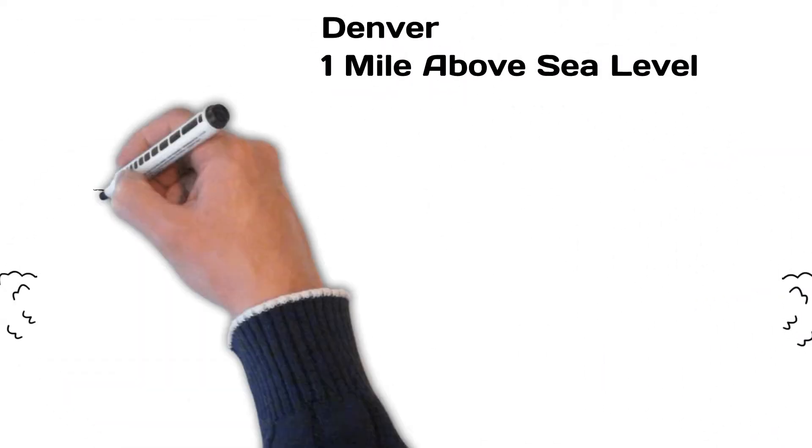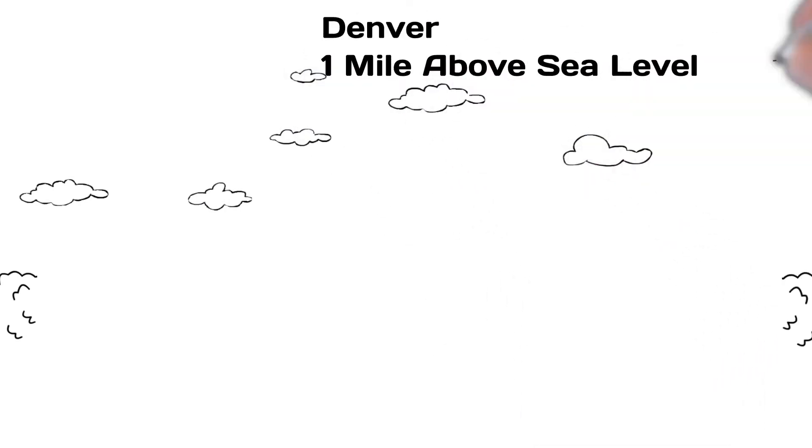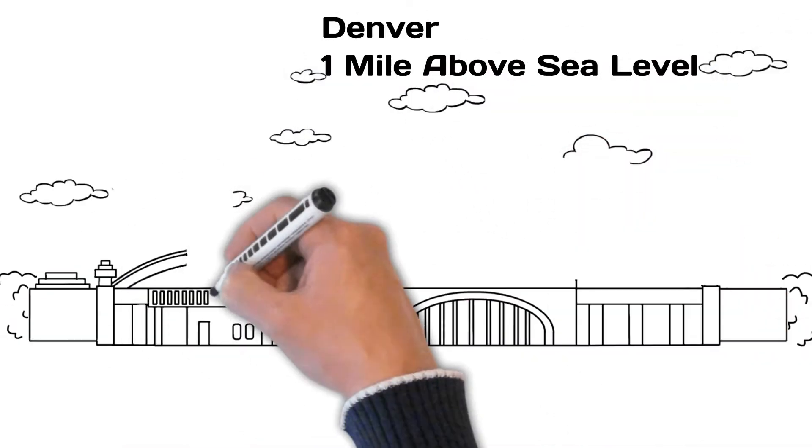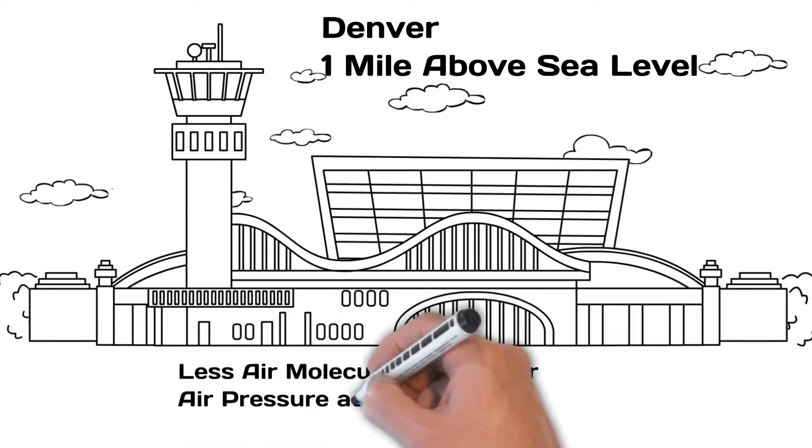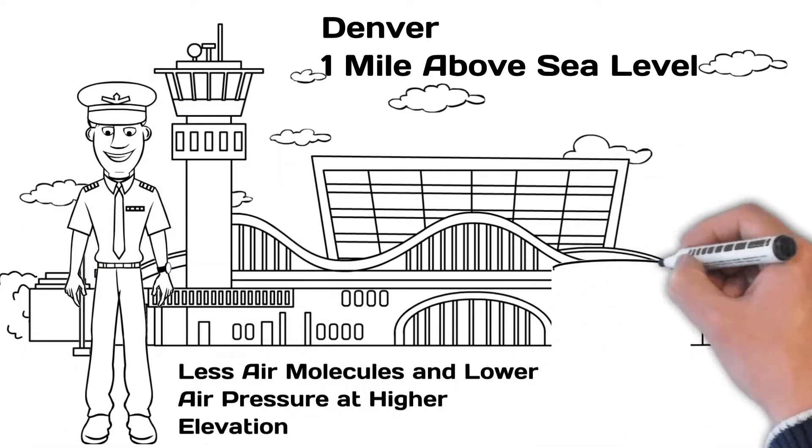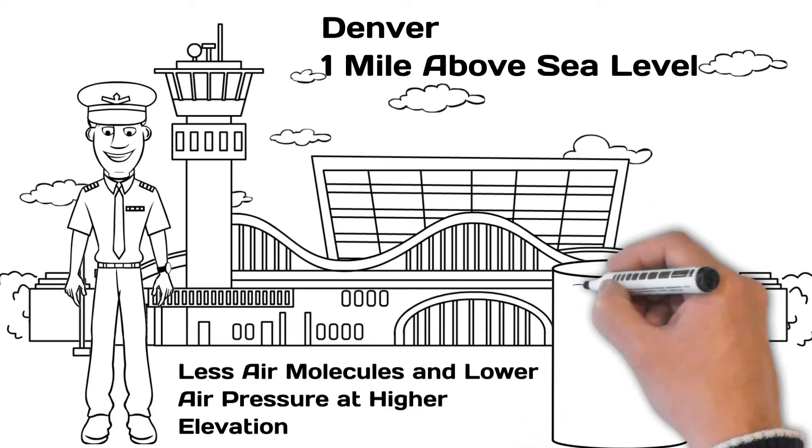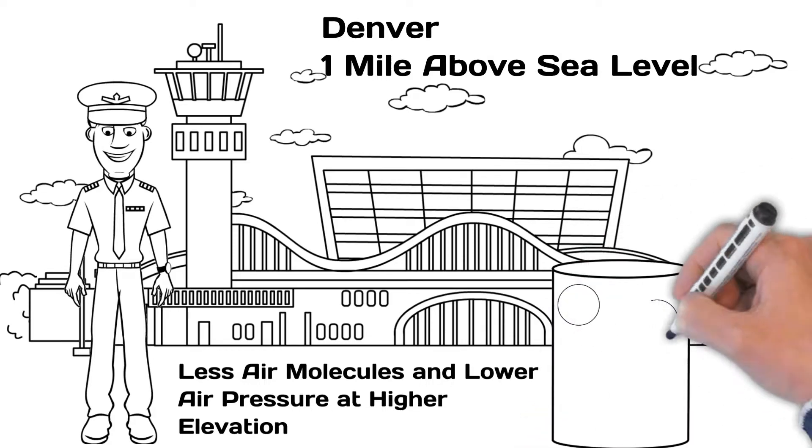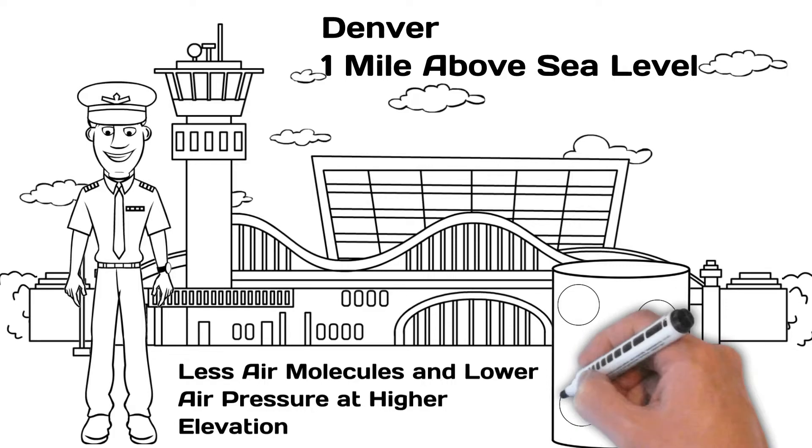Now, suppose we flew to Denver, Colorado, which is roughly one mile above mean sea level. The air in Denver is less dense, meaning there are less air particles in a given volume of air, and there is less air pressure when compared to sea level. Thus, aircraft performance is decreased at the higher elevation.